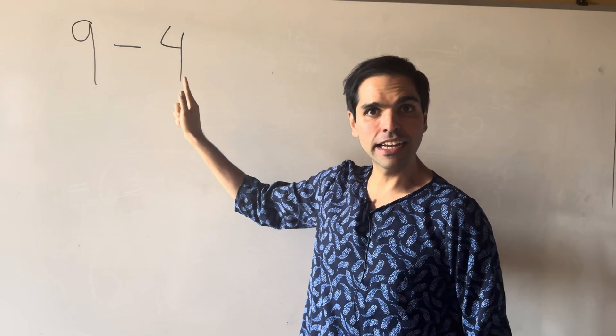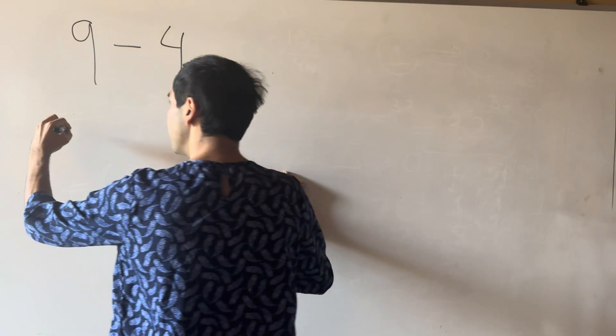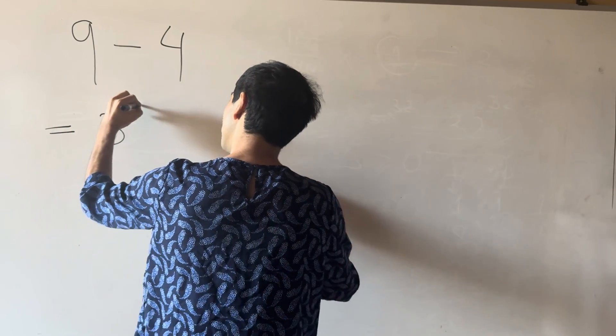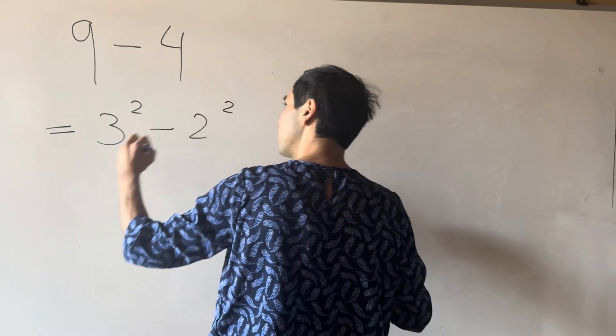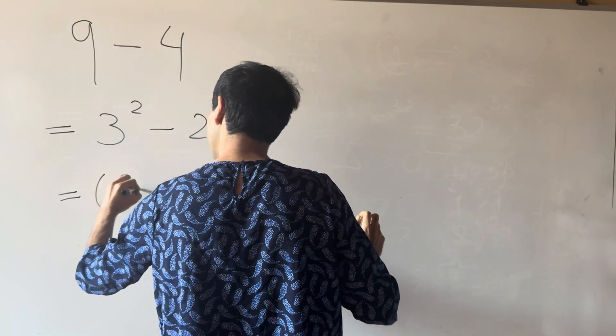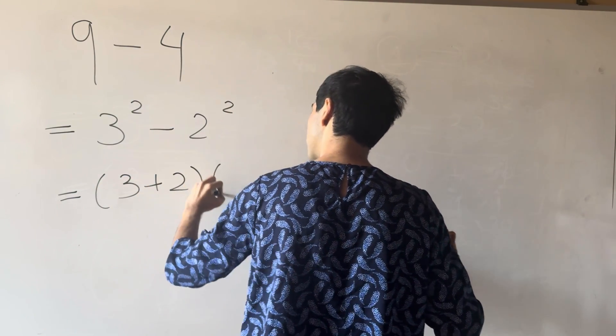So let's calculate 9 minus 4, and notice it's a difference of 2 squares. So it's 3 squared minus 2 squared, so it's 3 plus 2 times 3 minus 2.